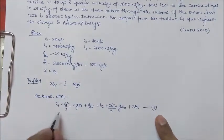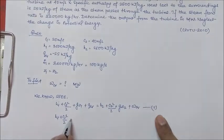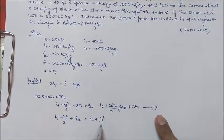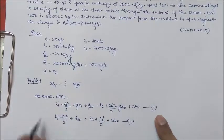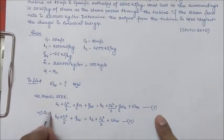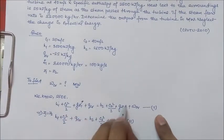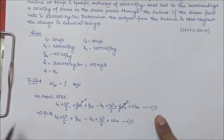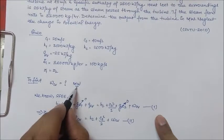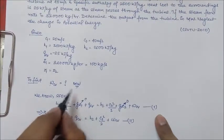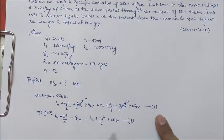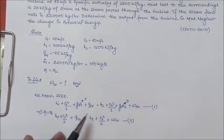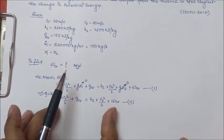From the given conditions, this equation can be simplified. Since Z1 equals Z2, the potential energy terms cancel out, giving us: h1 + C1²/2 + qCV = h2 + C2²/2 + wCV. This is equation 2. Now, as we want our final value of WCV in megawatt, we have to work through this equation and express everything in kilowatt or megawatt terms.